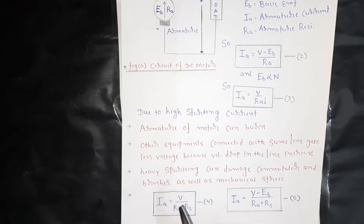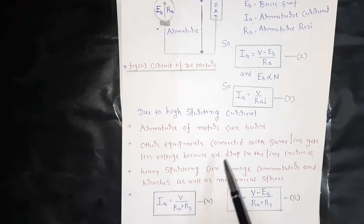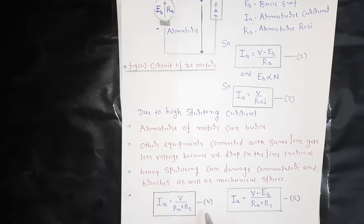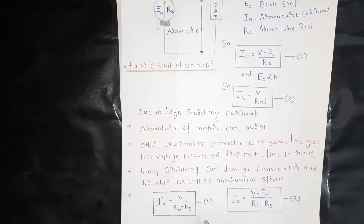What is the function of the starter? We use a starter to limit the starting current. What we have to do is described by equation number 4: IA equals V divided by (RA plus RS), where RS is the starting resistance. By using a starter, we add an external starting resistance in series with the armature.